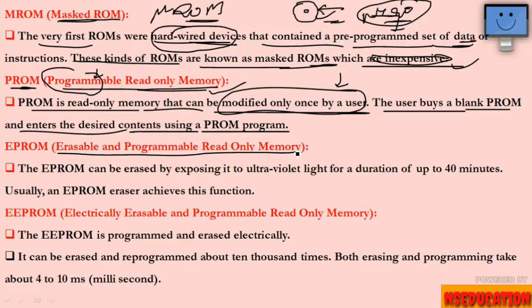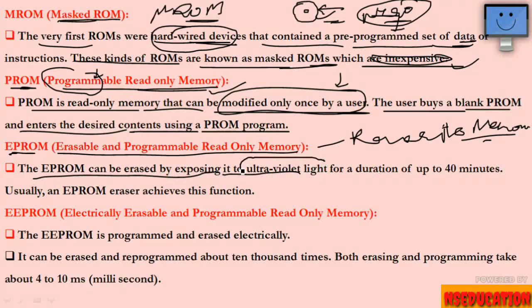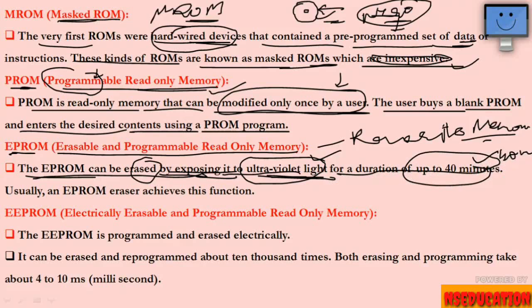Next is EPROM — Erasable and Programmable Read-Only Memory. EPROM can be erased by exposing it to ultraviolet light. When we expose it to ultraviolet light, the data stored in it can be erased. It must be exposed for a duration of up to 40 minutes. The device that performs this function is called an EPROM eraser.